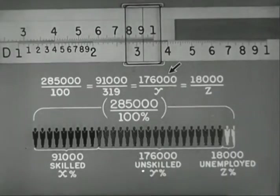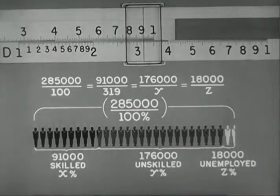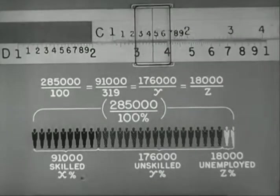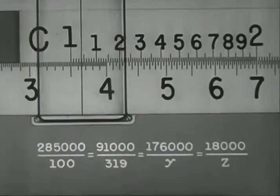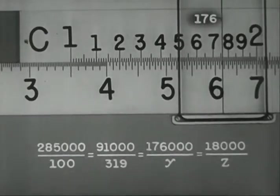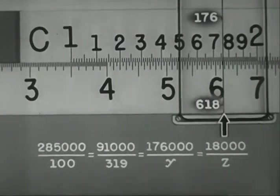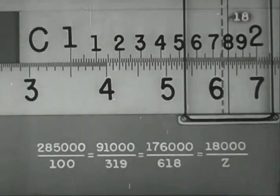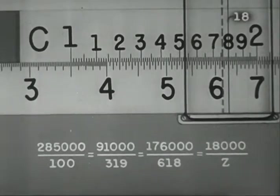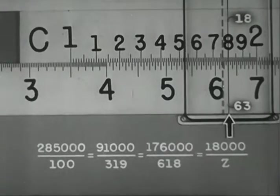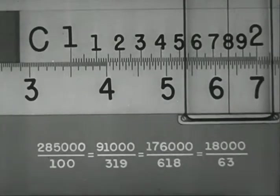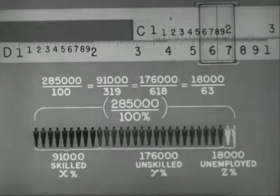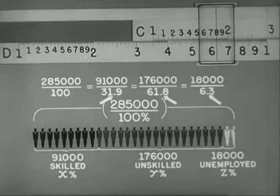Since 176 is beyond the body, shift to the other index. And under 176 on C, read y as 618. Under 18 on C, read z as 63. As a final step, add the decimal points.